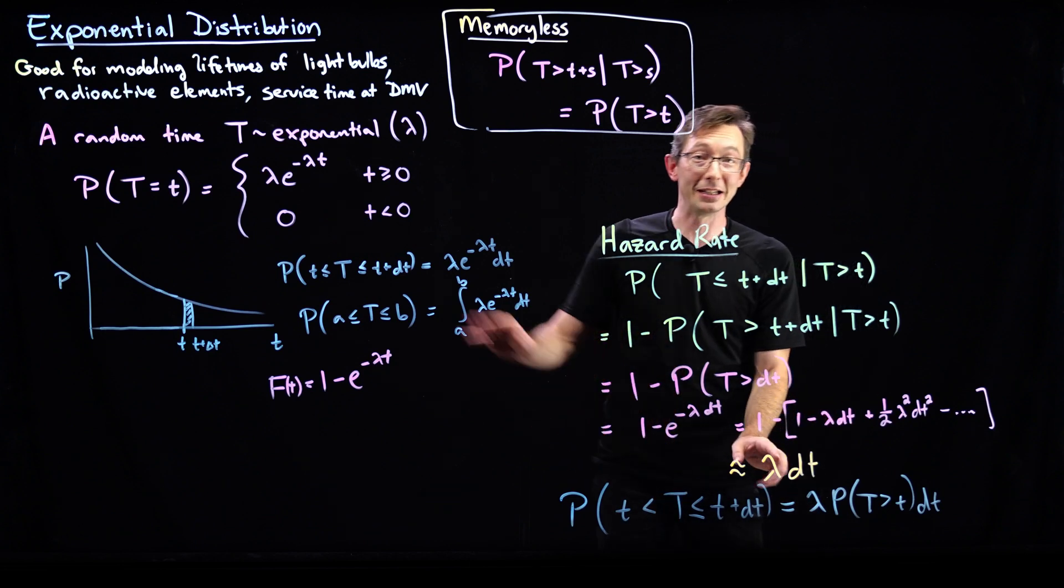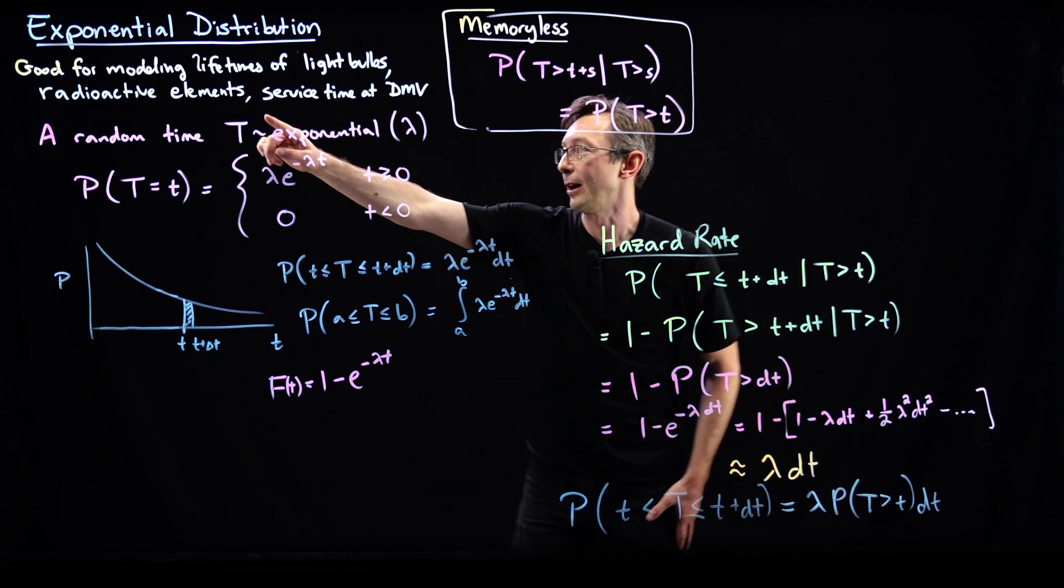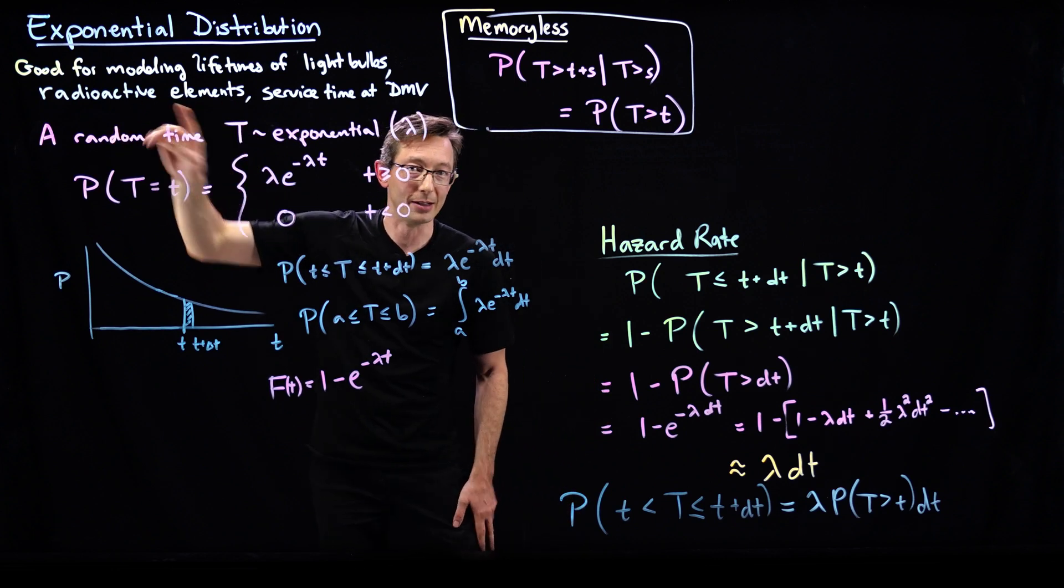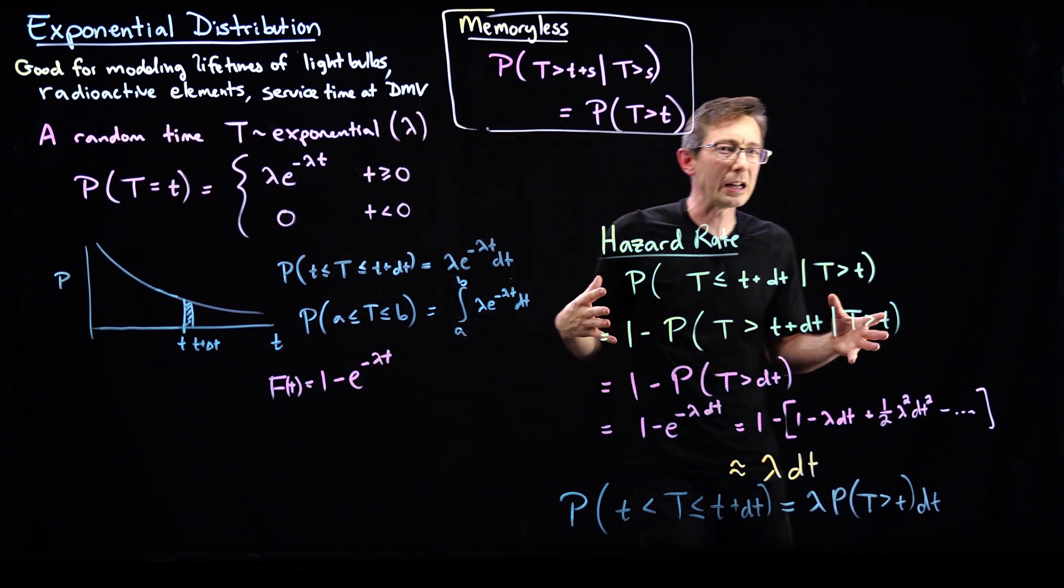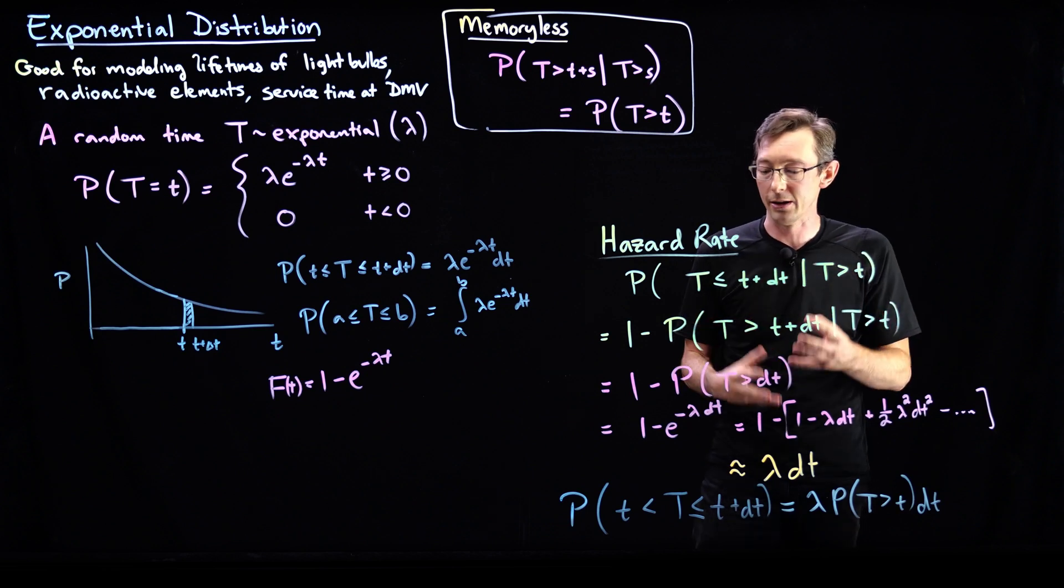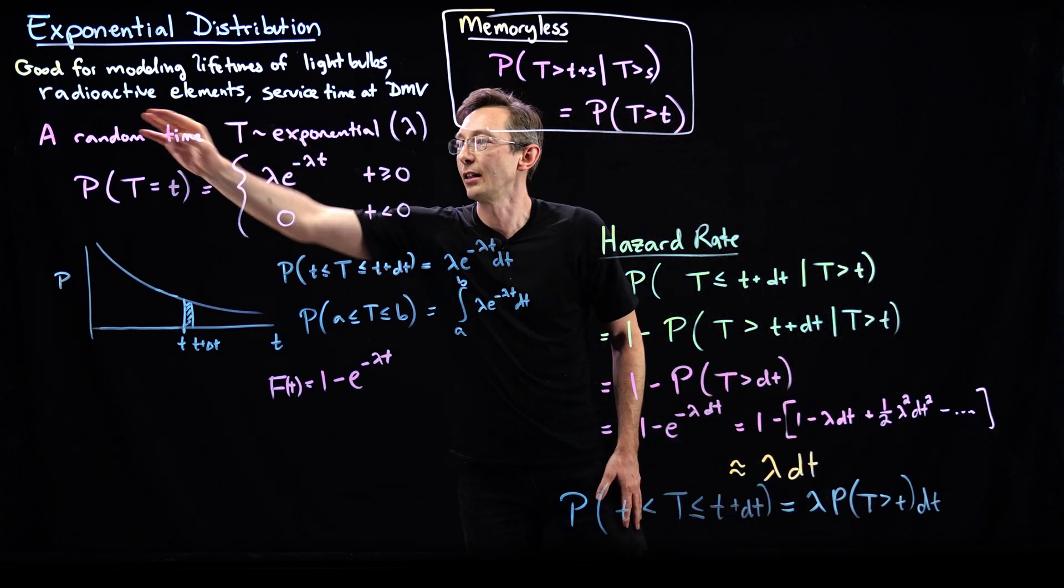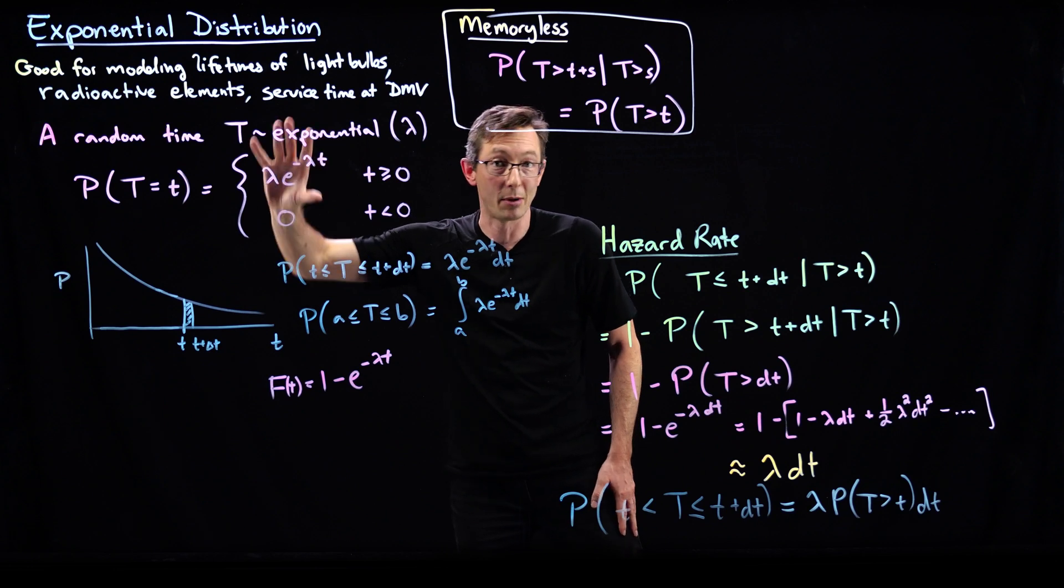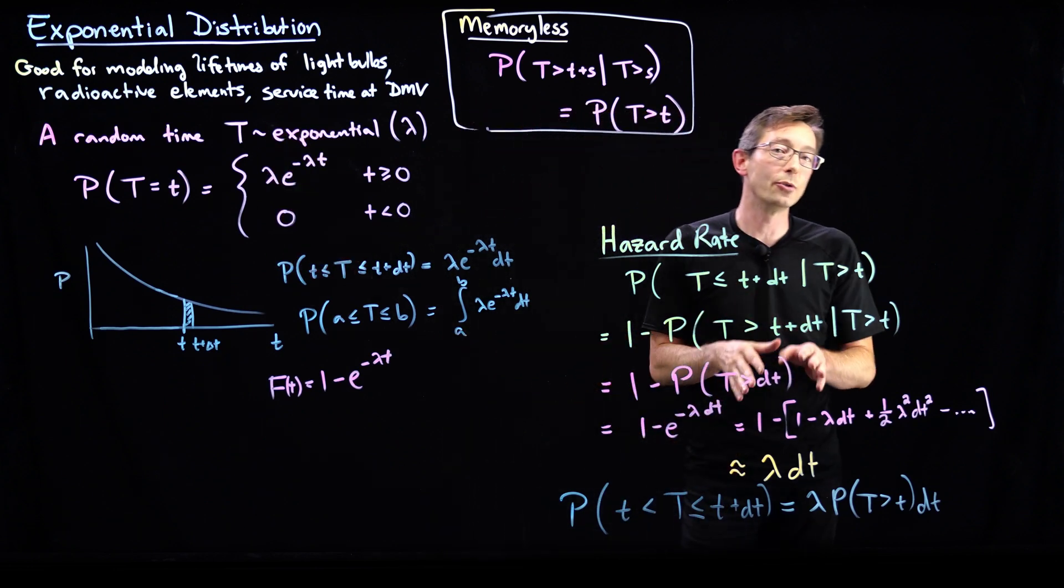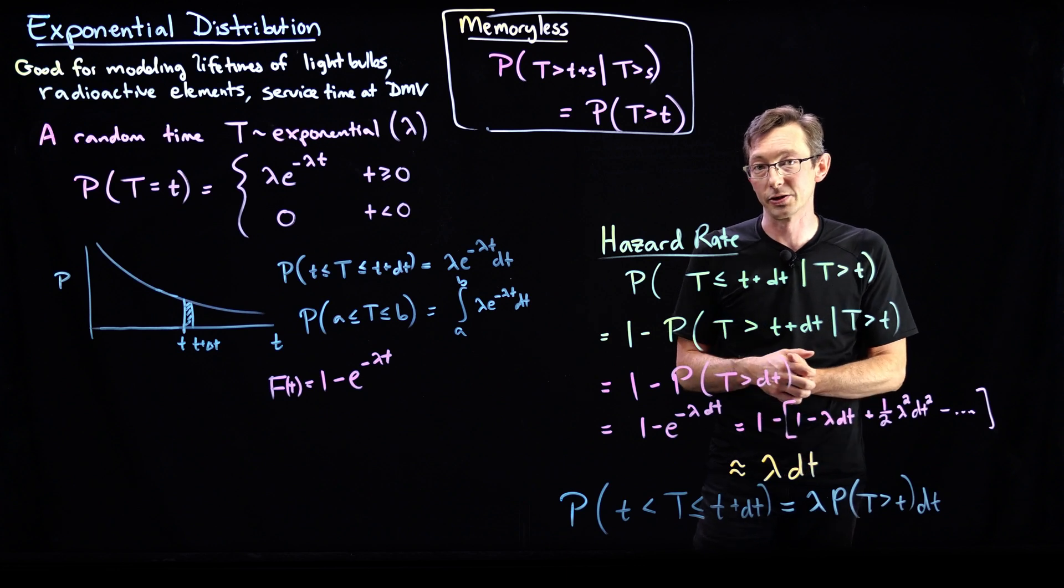You could write down a differential equation and actually relate these if you wanted to. And you could think about it in context of radioactive elements. That would be a pretty cool, pretty big homework problem. That would take a little while to really wrap your head around, this hazard rate being lambda dt and radioactive elements and deriving this probability density function. But if you do that, you'll have a super, super deep understanding of this exponential distribution.